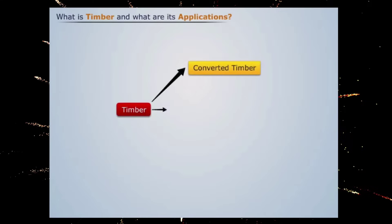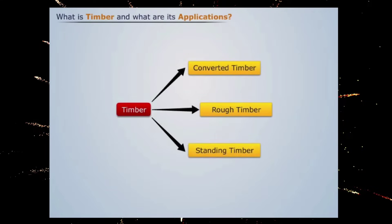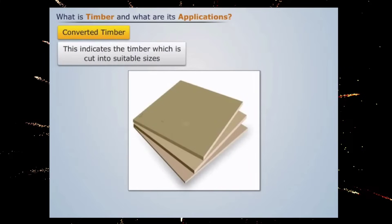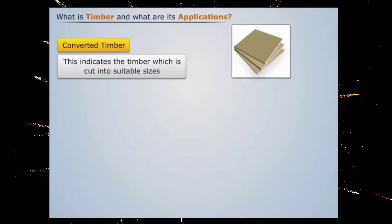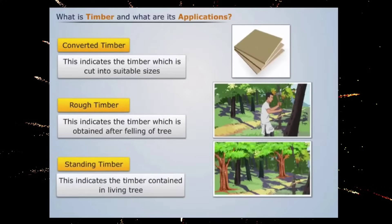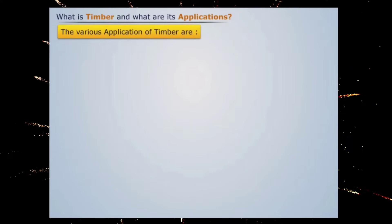Converted timber indicates the timber which is cut into suitable sizes. Rough timber indicates the timber which is obtained after felling of a tree. Standing timber indicates the timber contained in a living tree. These are the various applications of timber.